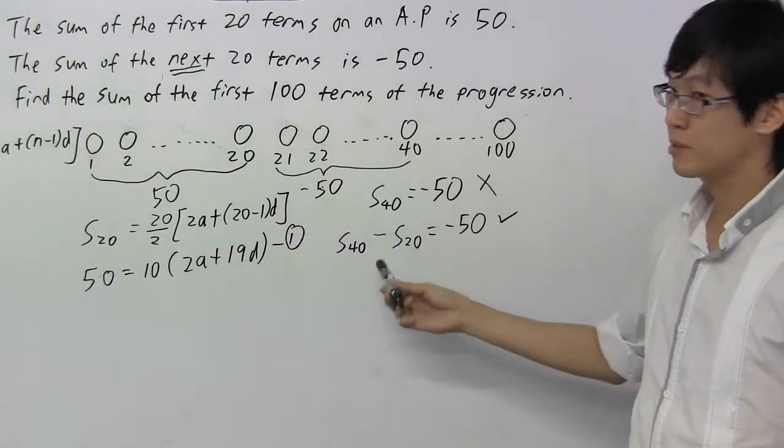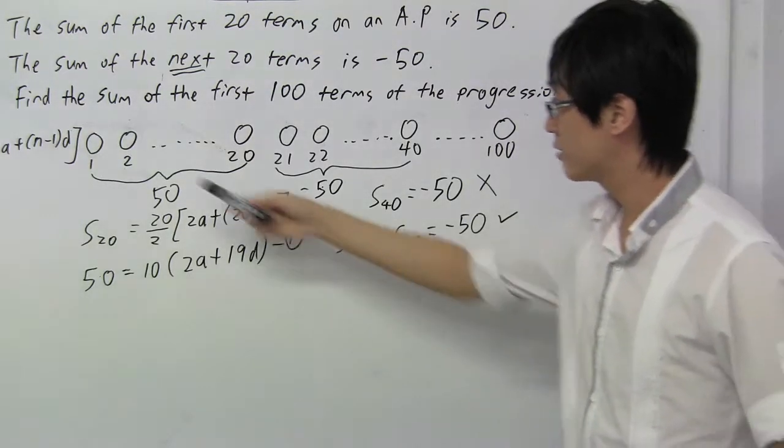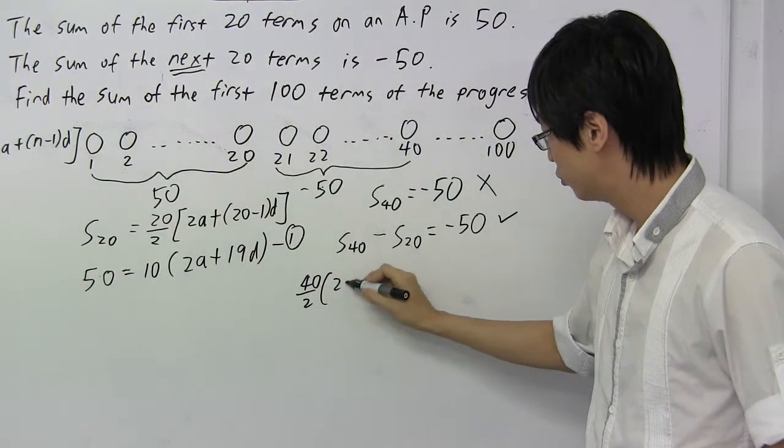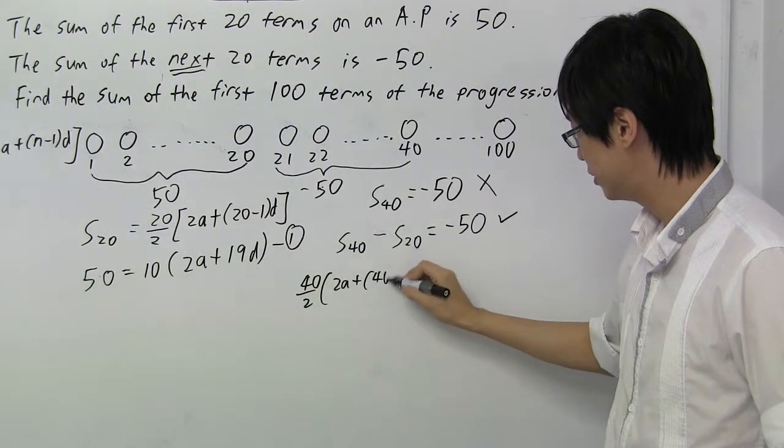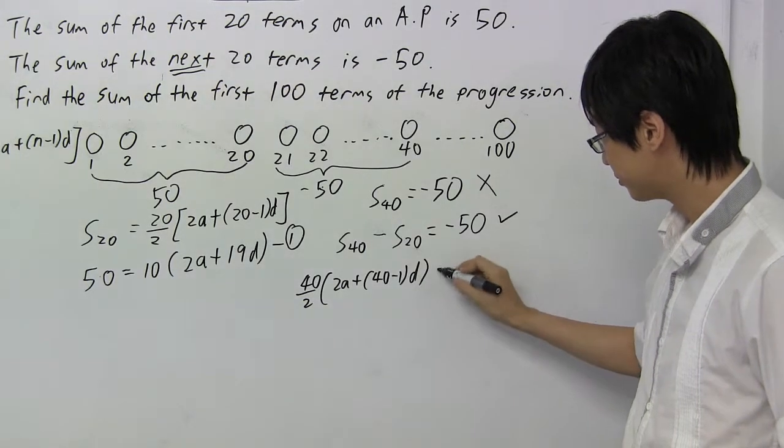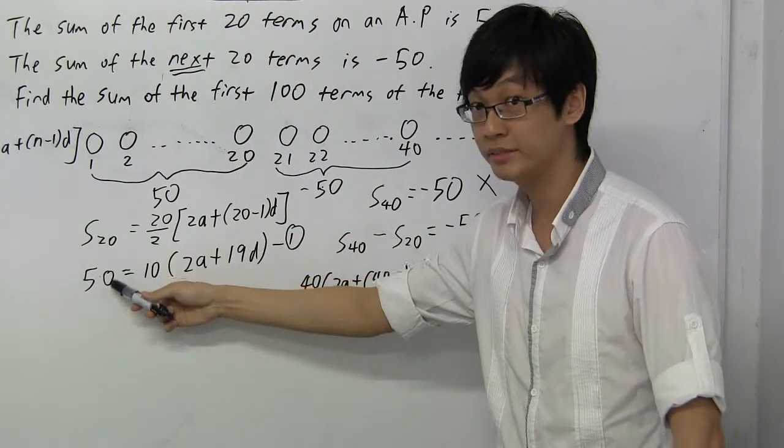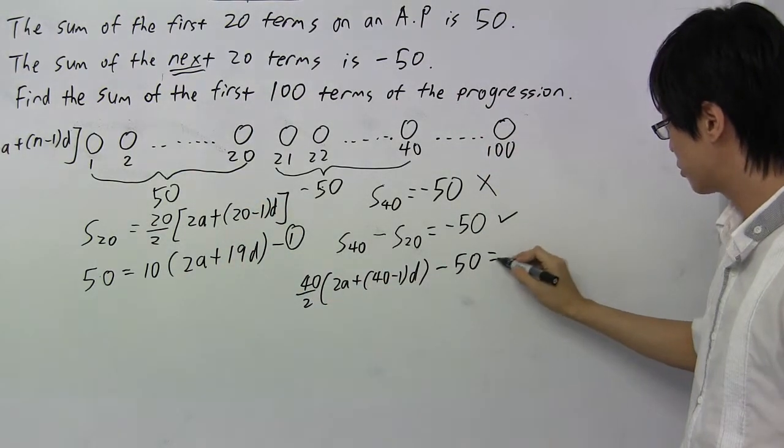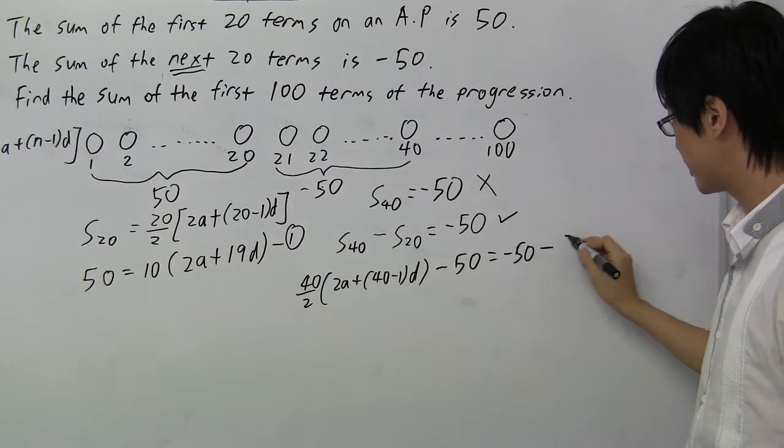And so now you just need to apply the formula again. So I sub 40 inside. I'll get 40 over 2, 2A plus 40 minus 1D. And my S20 is 50, right? Summing from here is 50. Equals to minus 50. And this is my second equation.